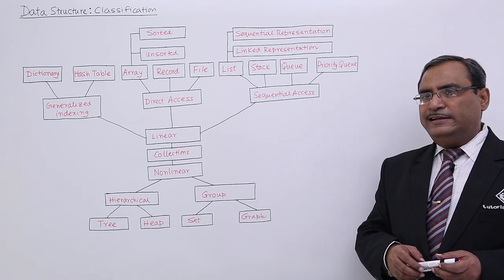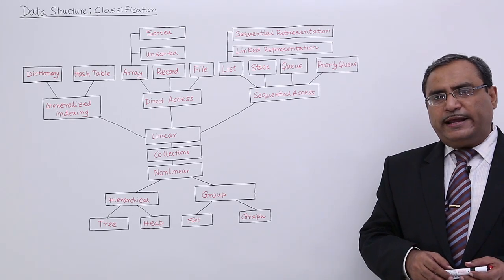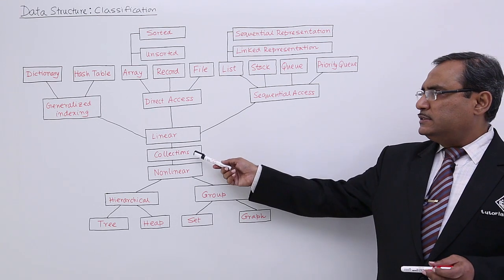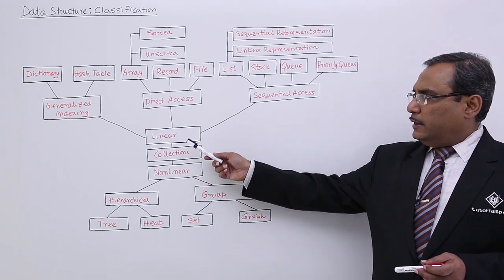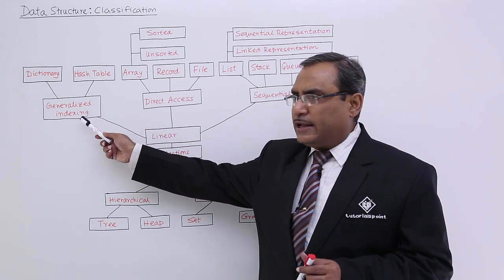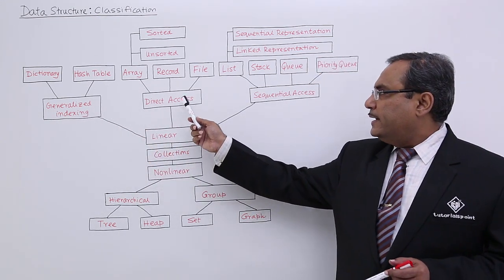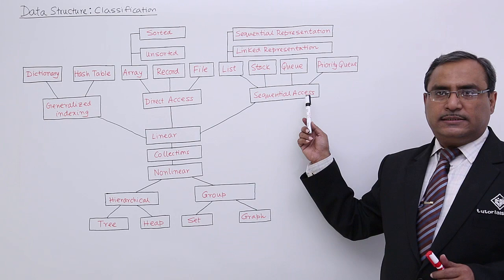Let us classify data structures into different categories. Collections can be of two types: linear and non-linear. Linear can be of generalized indexing, direct access, and sequential access.